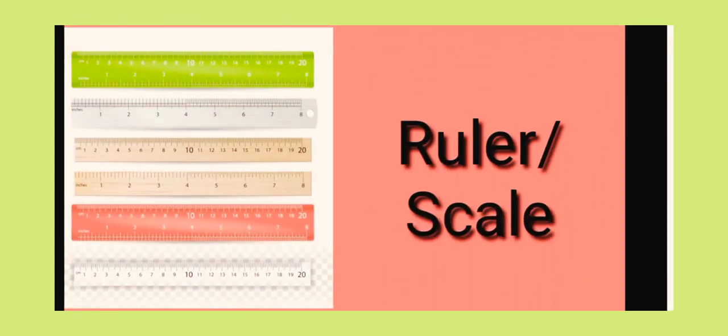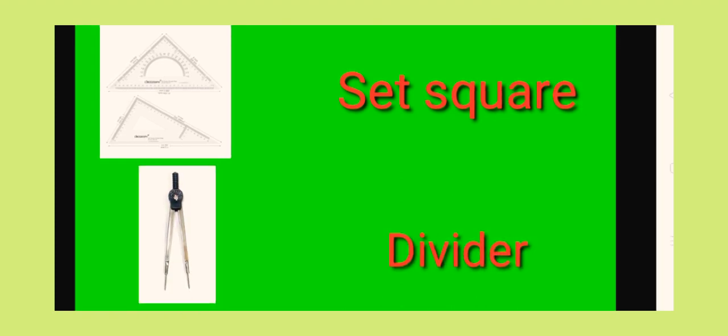The next one is a ruler, or you can say scale, which is useful for us. The next one is the two set squares. These two set squares are useful to draw angles — you can draw angles of 90 degrees, 30 degrees, 60 degrees, and 45 degrees. The instrument shown alongside is the divider. It is used to measure the distance between two points. To do so, a scale also has to be used along with the divider.